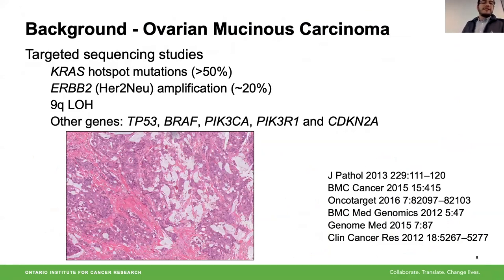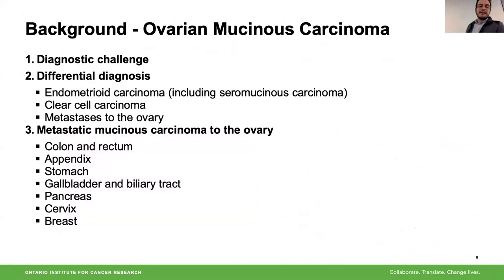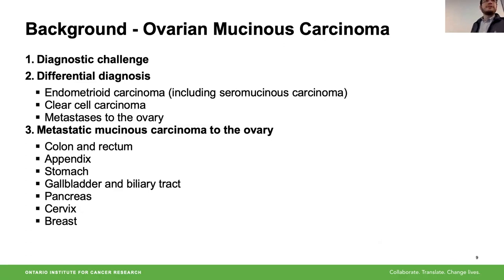That's what motivated us to pursue a genomic approach in our cohort. There is some knowledge about the molecular profile of ovarian mucinous carcinoma, mostly based on targeted sequencing with very limited series. We know that K-RAS mutations and HER2 amplification are prevalent. The need for this is not only academic but also has very important clinical implications for correctly identifying these tumors.